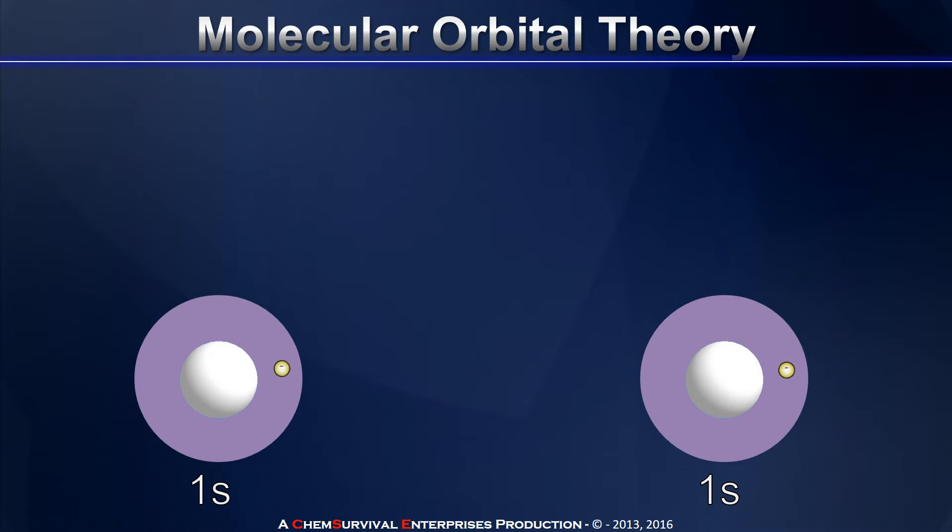And of course we know that these electrons don't move in perfect circles around the nucleus as I've depicted them here, but they do define a region of space defined by a sphere.